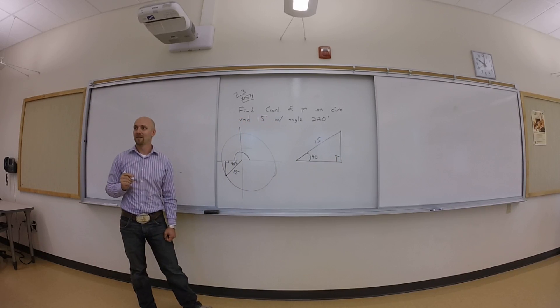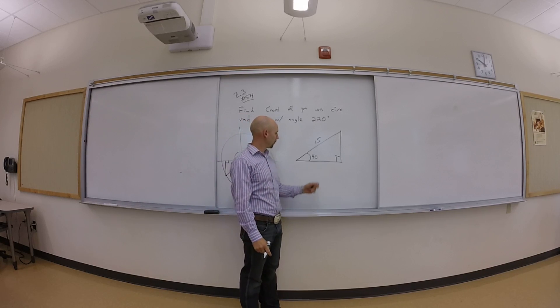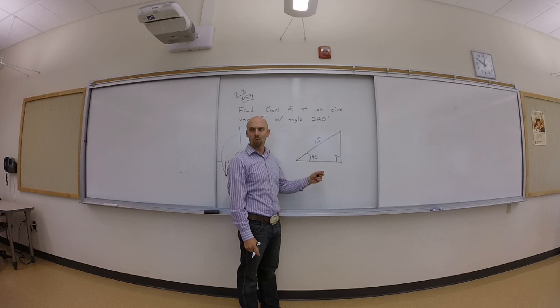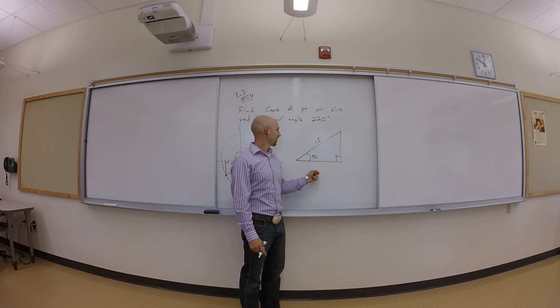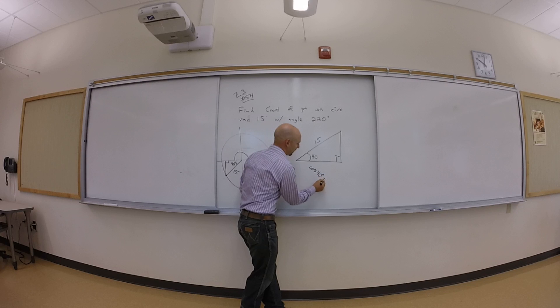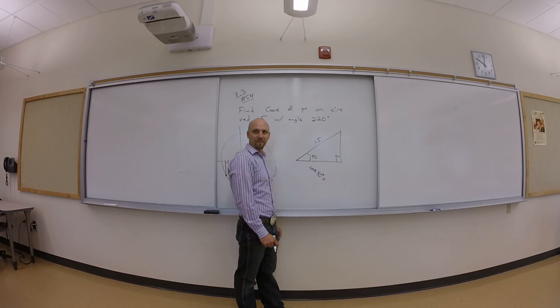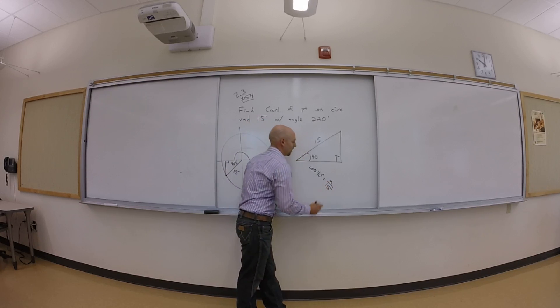So do the cosine of 40? Yeah. Good. So cosine of 40 will give me which? Adjacent. Adjacent. Cosine, right? Yeah. Adjacent. So we can do it. Okay. So cosine of 40 degrees is what? A over 15. A over 15.